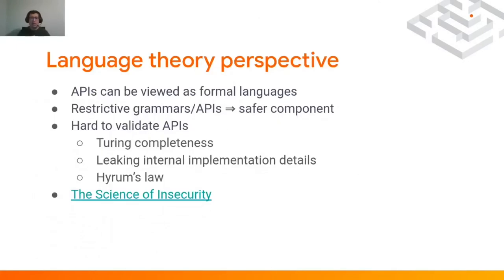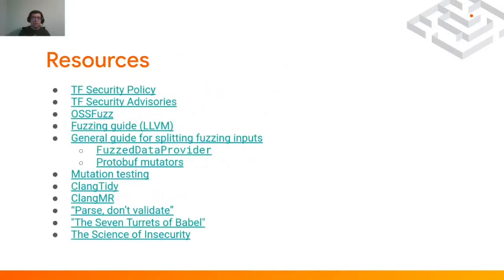APIs could be viewed as formal languages, where the strings the formal language accepts are the valid order of API calls. It is very hard to validate the APIs because of Turing completeness and Hiram's law, which results from leaking implementation details, but it should be possible. I would recommend the Science of Insecurity talk from many years ago from a security conference. These are some resources from everything discussed in these slides, and I'll now leave the floor for questions. Thank you very much.